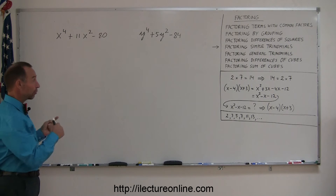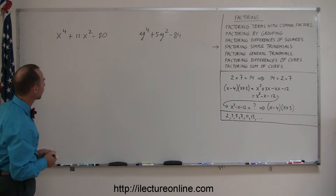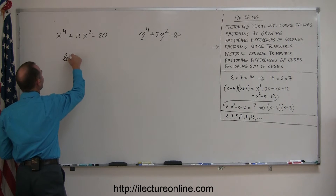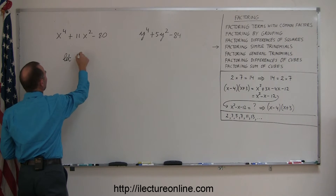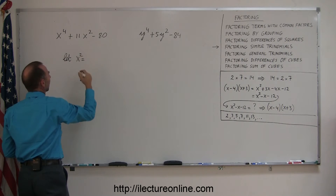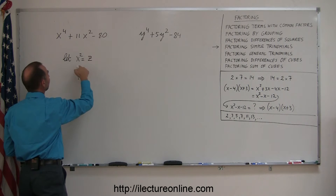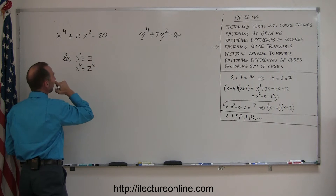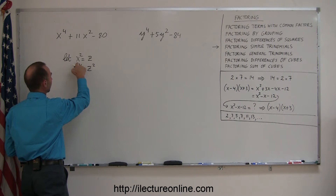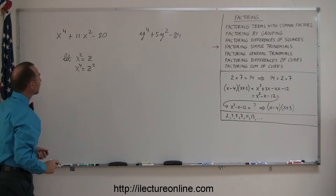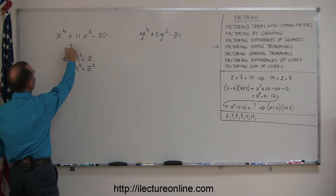we can change it into a form that you're more familiar with. If you let the square term equal a letter to the first power, like z to the first power, and then x to the fourth equal z squared — because if you square both sides, x squared gives you x to the fourth and z squared gives you z squared — then you can substitute that back into the equation.